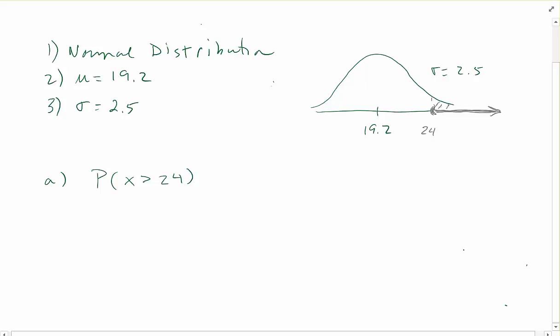So my interval here is 24 to infinity. I need the probability of being in that interval, so I need the area up in the upper end there of the distribution. So what I have to do is translate the 24 into a z-score so I can use standard normal. So 24 subtract 19.2 over 2.5 is